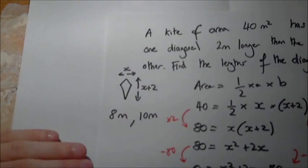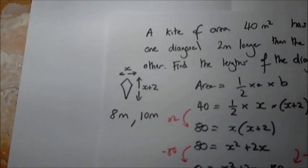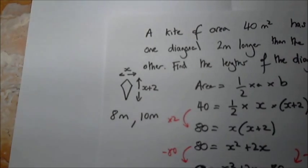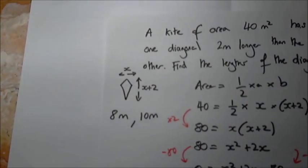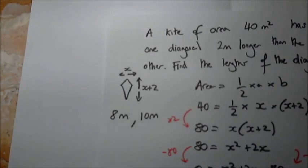Remember, you need to remember units in your solution. The question is talking about meters squared in terms of the area and the length is talking about meters. So the two diagonals, one is eight meters and the other is 10 meters, and we've completed it.